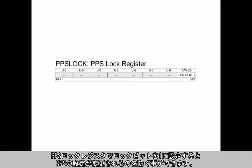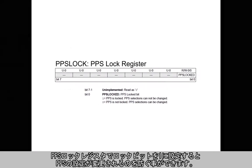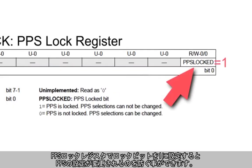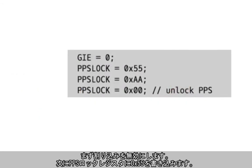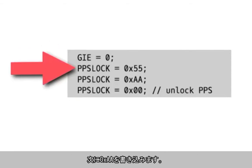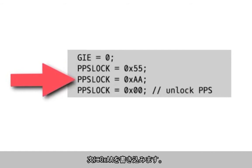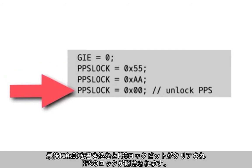Setting the PPS locked bit to a 1 in the PPS lock register prevents further changes, and there's a specific procedure to do that. The first step is to disable interrupts. Then the value of 0x55 is sent to the PPS lock register, followed by a value of 0xAA sent to the register. Then a value of 0 is sent to the register to clear the PPS lock bit and unlock the PPS.